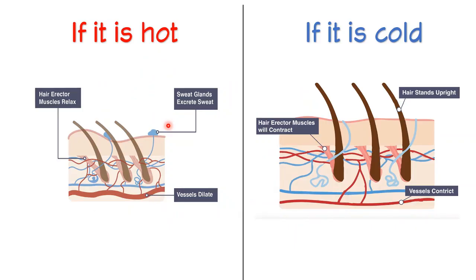The subcutaneous tissue plays a major role in insulating the body from the outside, keeping heat inside the body. If it is hot, the receptors in the skin and the hypothalamus detect a rise in body temperature. The hypothalamus responds by sending signals to the vessels in the skin, dilating them. When the arterioles dilate, more blood flows near the surface of the skin, losing heat by radiation. The sweat glands also produce more sweat, and when sweat evaporates from the skin surface, it absorbs energy from the skin.